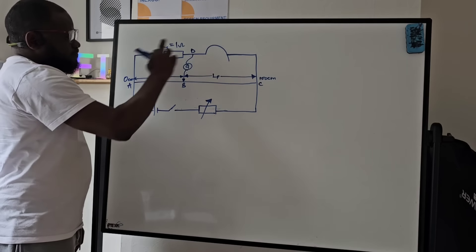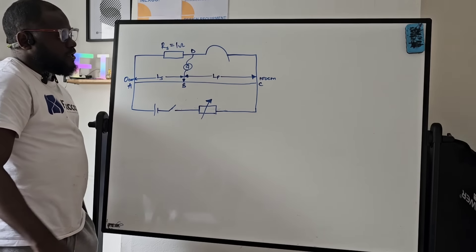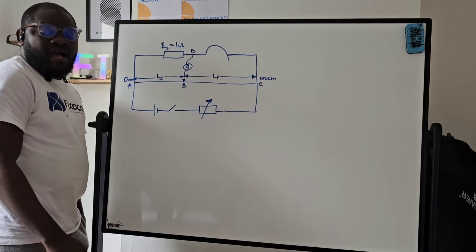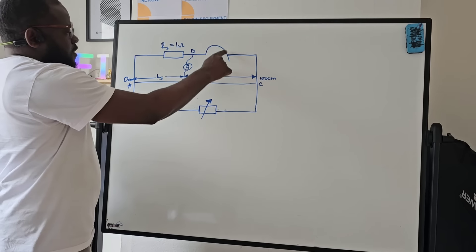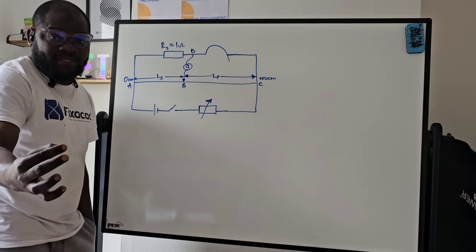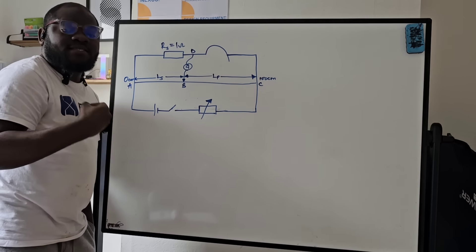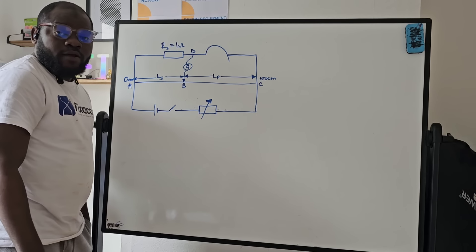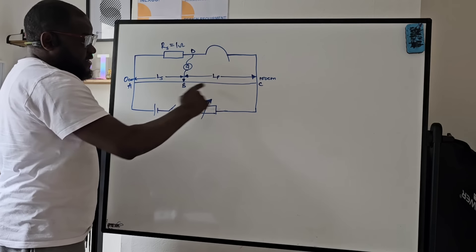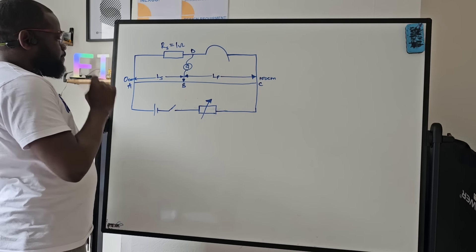Here is the circuit diagram we are going to be using. All these lines you are seeing here are wires. This is also a wire but it's not a connecting wire - it's a special kind of wire that is not coated. This can either be a constantan wire. A constantan wire is made up of copper and nickel alloy. This straight line you're seeing is a constantan wire on top of a ruler on your meter bridge.